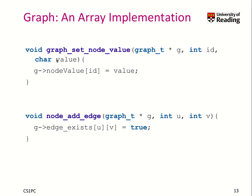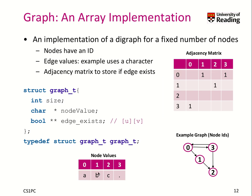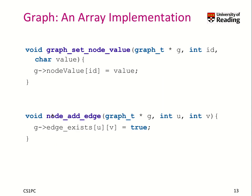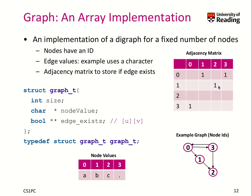Let's get started with the implementation of the individual functions. First, we want to set the node value of a specific node. There is a very lightweight function called graph_set_node_value. It takes a graph, a node ID, and a value. All it does is change the character in the array to a specific value. Then you can add an edge — you define u and v, and then you set the value in the matrix to true, setting it to 1 for that specific combination of u and v.